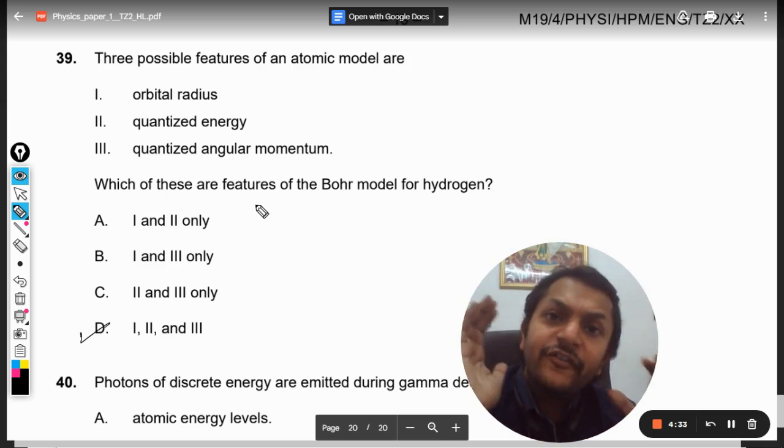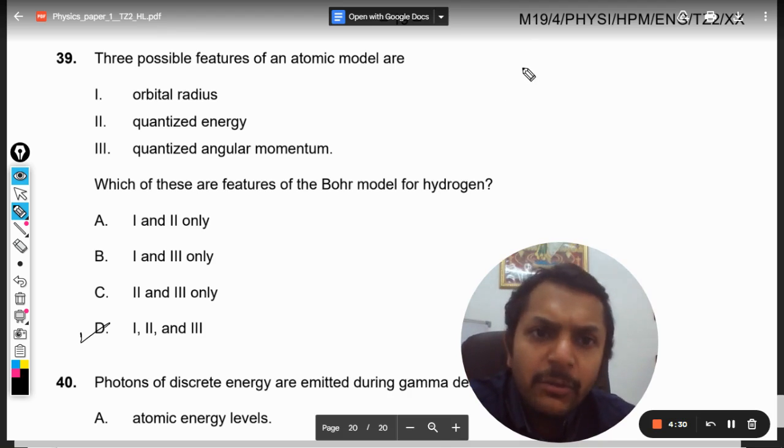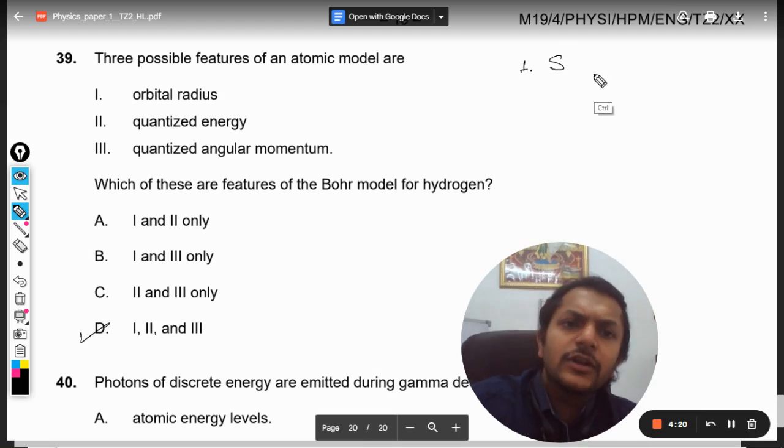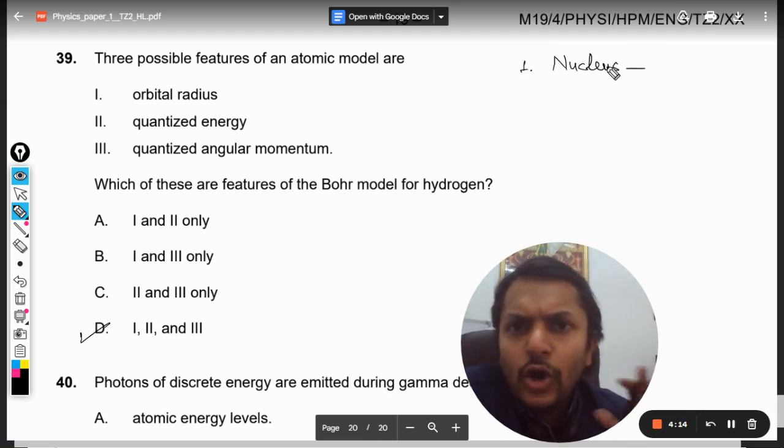Let me explain you this thing. First of all, what are the four important postulates of Bohr's model of hydrogen? Number one is that there is a concept of stationary orbits.